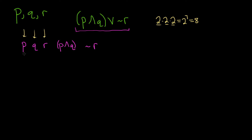Let's list them in an organized fashion. First: true, true, true. Then the case where exactly one is false — true, true, false. Then we permute the false: true, false, true. And the last case where exactly one is false: false, true, true.